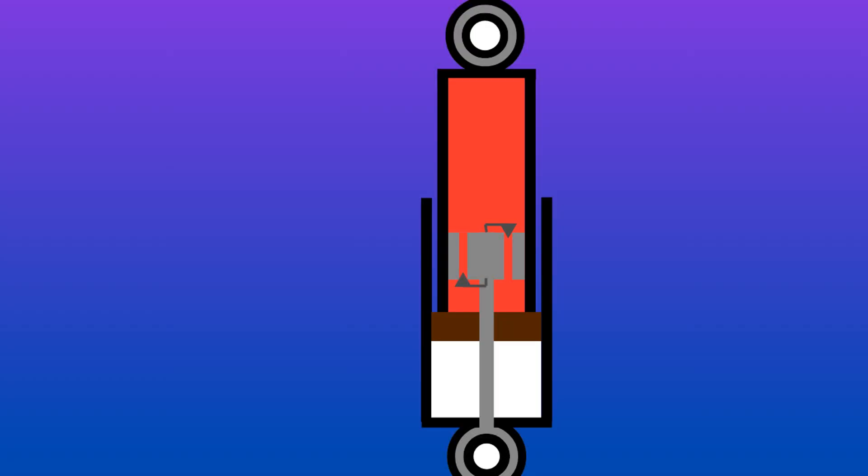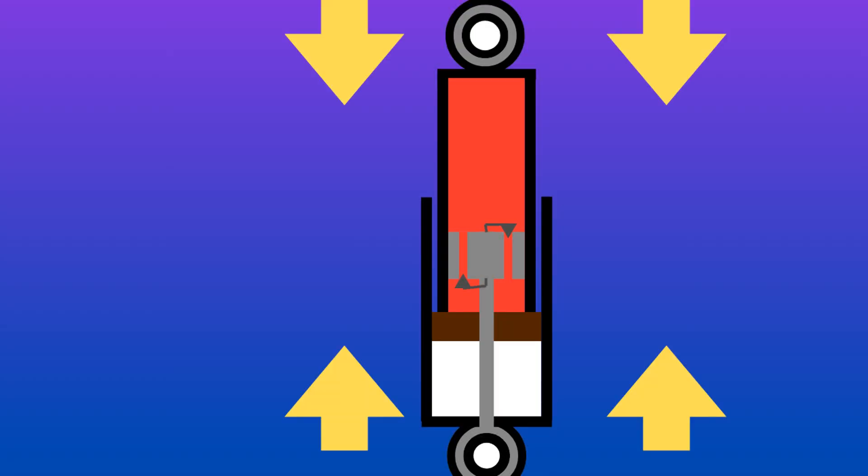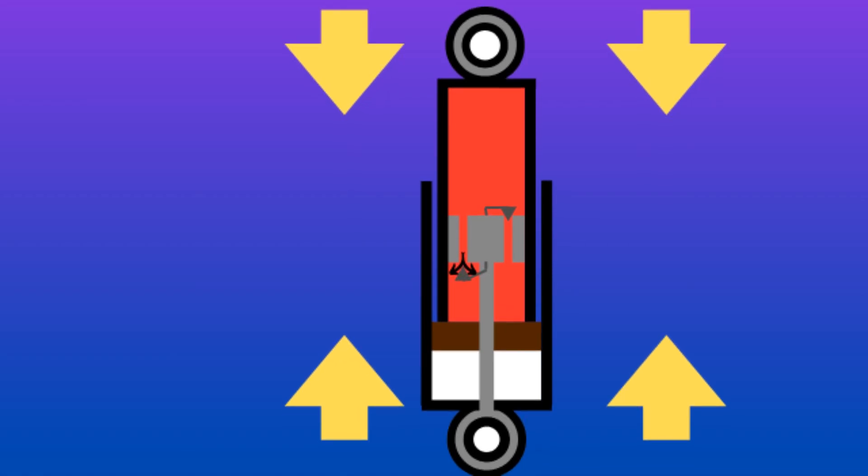As the shock absorber experiences a compression, some of the energy that is causing the compression is used to increase the pressure in this upper oil chamber, which then forces oil to open the valve on the left and squeeze oil into the lower chamber.